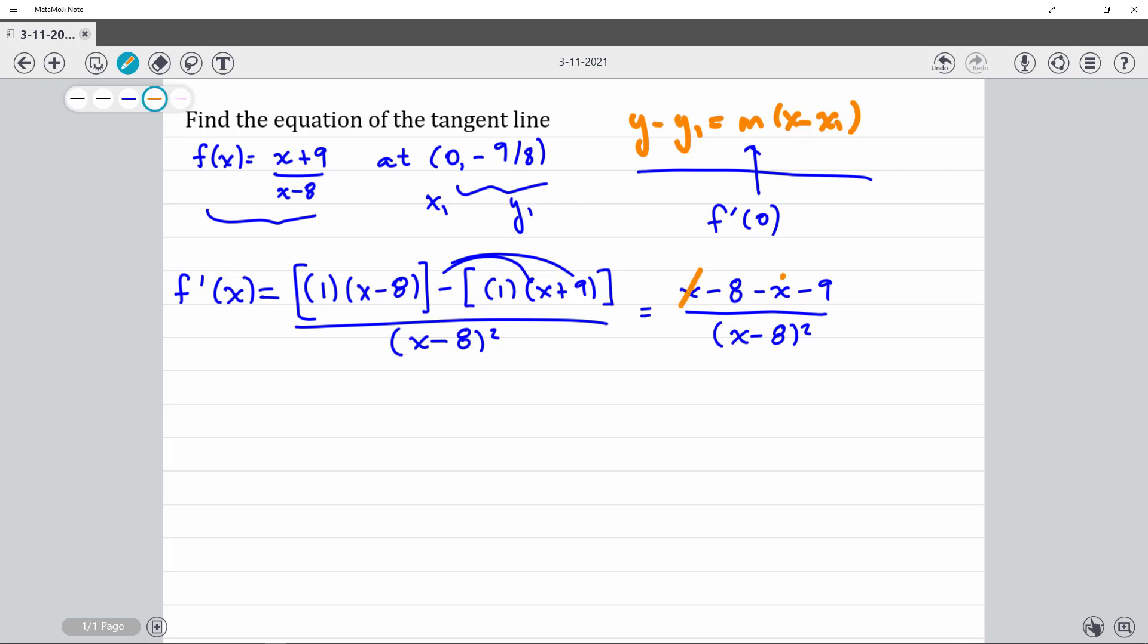The x's will cancel out, because all my x's live in Texas. Negative 8 minus negative 9, negative 17, x minus 8 squared.